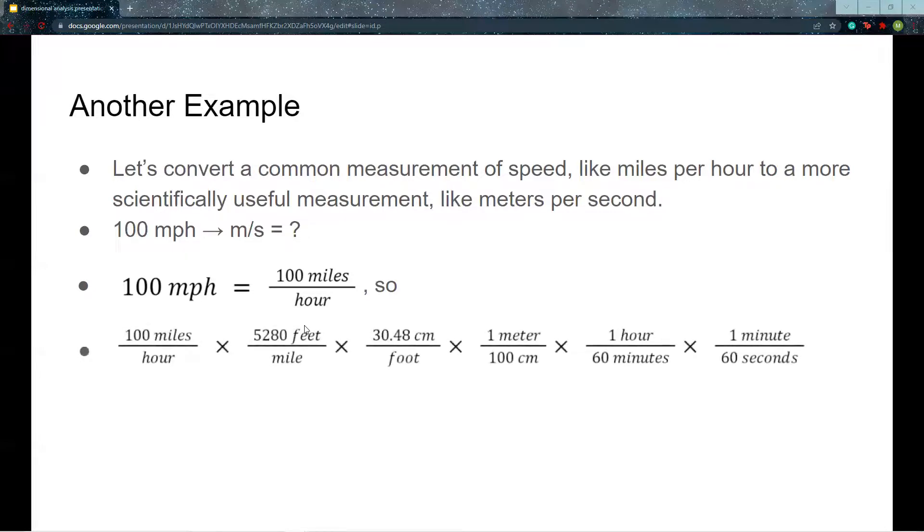100 miles per hour can be converted to feet by multiplying by 5,280 feet per mile. Feet are converted to centimeters by multiplying by 30.48 centimeters per foot. Centimeters can be divided by 100, so there are 100 centimeters in one meter.